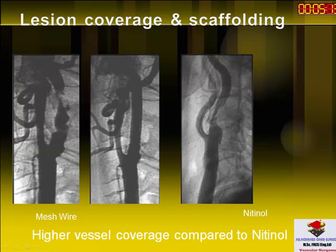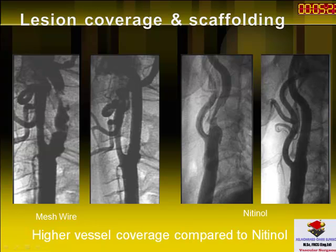If you are looking for better scaffolding — for example, a nasty-looking lesion with an ulcer crater and possibly fresh thrombi — you are looking for a vital characteristic which is lesion coverage and good scaffolding. This is achieved by mesh wire stents, and you can see the difference in the resulting pictures between a mesh wire stent and a nitinol stent.